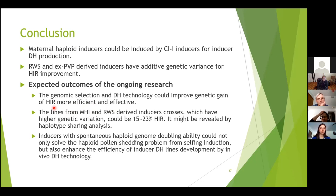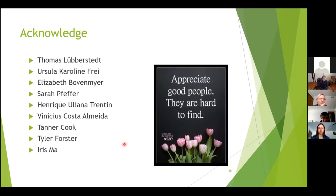In summary, the maternal haploid inducer can be induced by C1I inducer for inducer DH line production. RWS and SPVB-derived inducers still have additive genetic variation for haploid induction rate improvement. The expected outcome of my ongoing research is that genomic selection and DH technology can improve the genetic gain of haploid induction rate in our breeding population more efficiently and effectively. Progeny selected from the MHI and RWS population hopefully will have higher genetic variation, with some superior progeny exceeding 20% haploid induction rate, assessed by haplotype sharing analysis. Inducer with the SHGD gene not only solves the self-induction problem but also improves the efficiency of inducer DH line development. I would like to acknowledge the members of Dr. Thomas Lubberstead's lab for all their help.